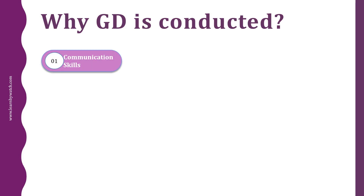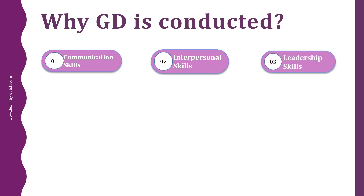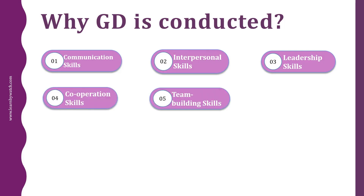Here is the list of skills judged by panelists. First is communication skills — to check how good you are at communicating with others. Second is interpersonal skills — to check how you behave and interact with the group. Third is leadership skills — to check your ability to work as a leader. Fourth is cooperation skills — to check whether you are cooperative. Fifth is team building skills — to check how you work and perform in a team.